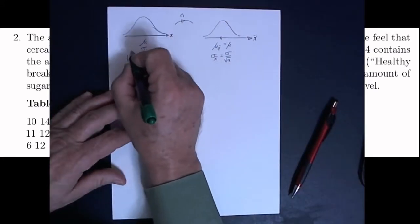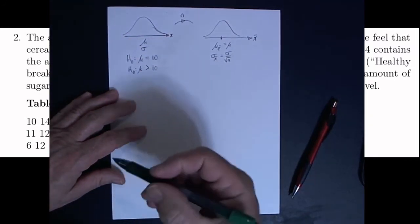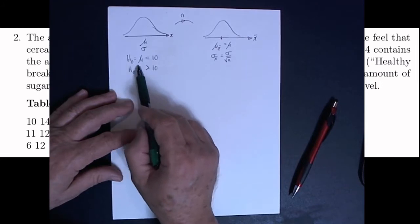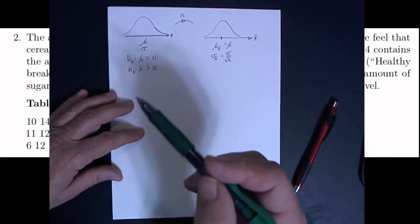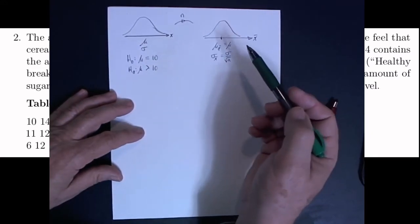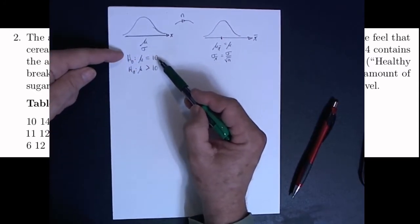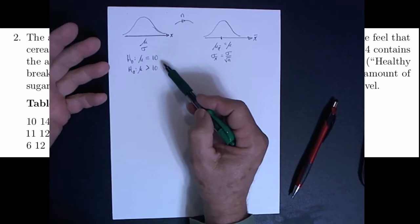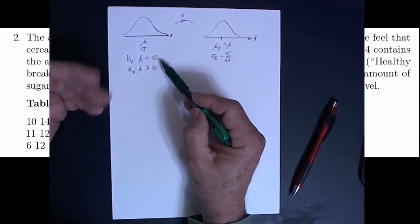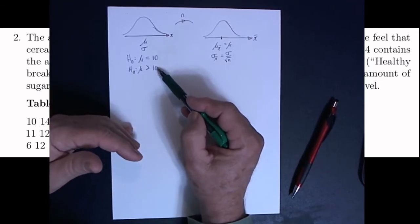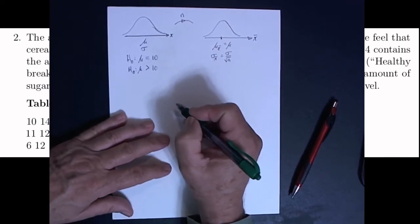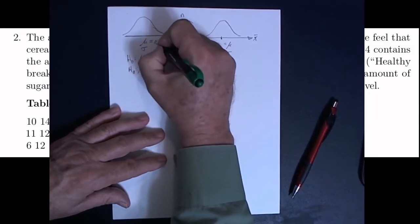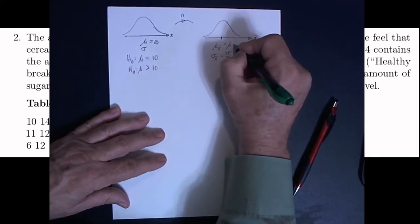You assume that the null hypothesis is true, then see what happens with our sample and check if it's unusual under that condition. If it's very unusual for our sample to have occurred given the null hypothesis is true, then we'll reject the null hypothesis — that gives evidence that the alternative hypothesis is true. On the other hand, if it's not unusual, then we'll fail to reject the null hypothesis. So we're going to assume this is true, meaning the mean is going to be 10, and the mean of the distribution of sample means will also be 10.